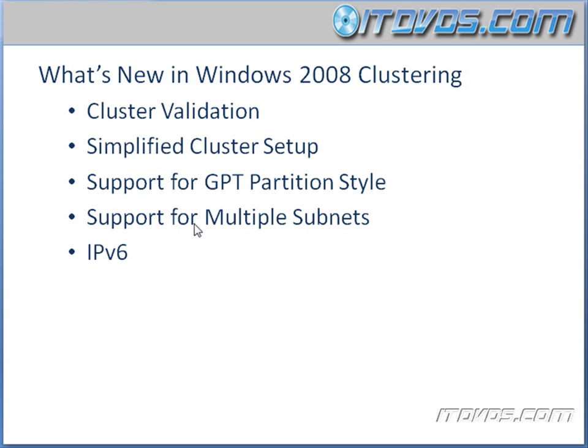We also have support for multiple subnets. Now we can have one node in one subnet in a cluster and another node in another subnet, which is especially important with multi-site clustering. And IP version 6 is now supported with Windows Server 2008 clustering as the next step forward.